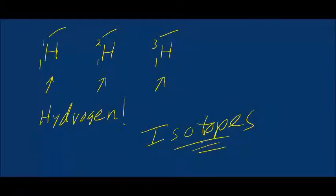Isotopes are atoms of the same element that have different masses because they have different numbers of neutrons.